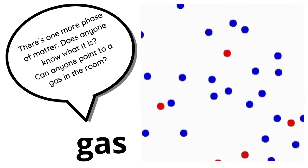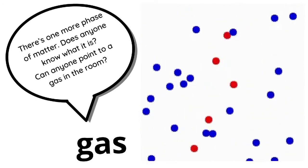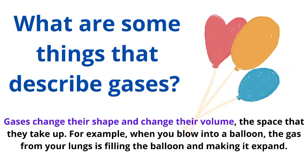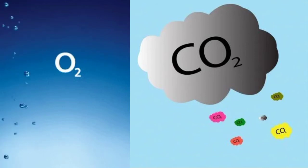The third phase of matter is a gas. What are some things that describe gases? Gases change their shape and change their volume — the space that they take up. For example, when you blow into a balloon, the gas from your lungs fills the balloon and makes it expand. Examples of gases are oxygen and carbon dioxide.